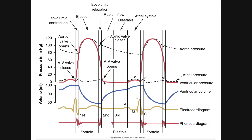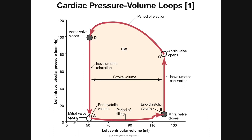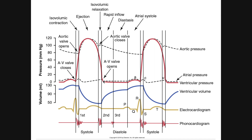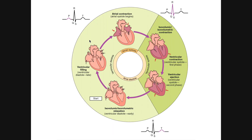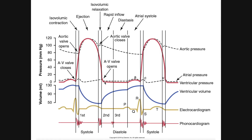We're going to begin at the same point as the previous video — a state where the AV valve, or mitral valve, is open and the aortic valve is closed. This is the period of ventricular filling. The vertical line here marks where the aortic valve closed in the previous cycle, and this vertical line is where the AV valve opens. During ventricular filling the ventricles are in diastole, so we see an increase in blood volume in the left ventricle but really no change in pressure — pressure is constant and volume is increasing.